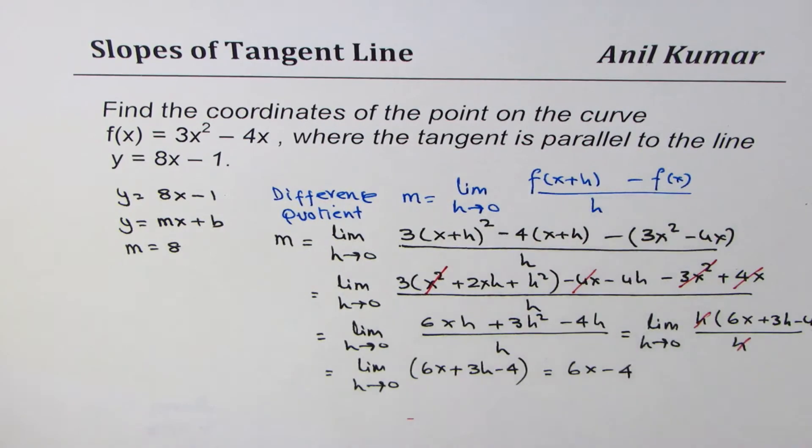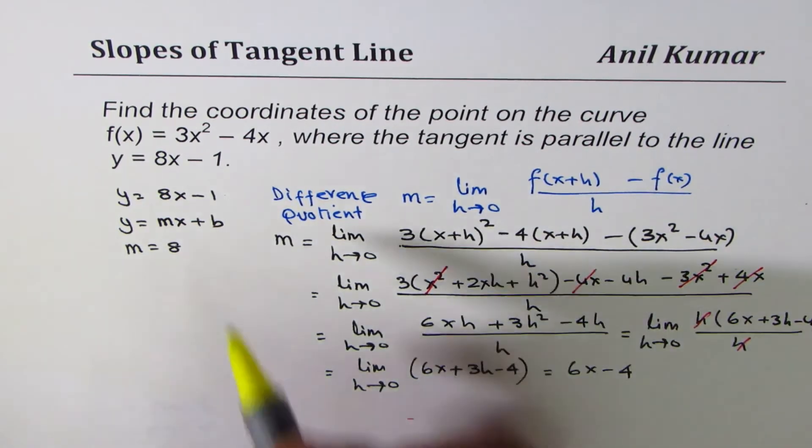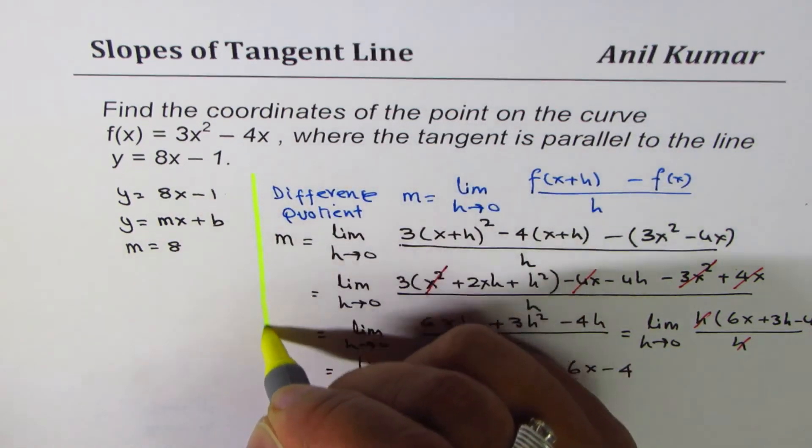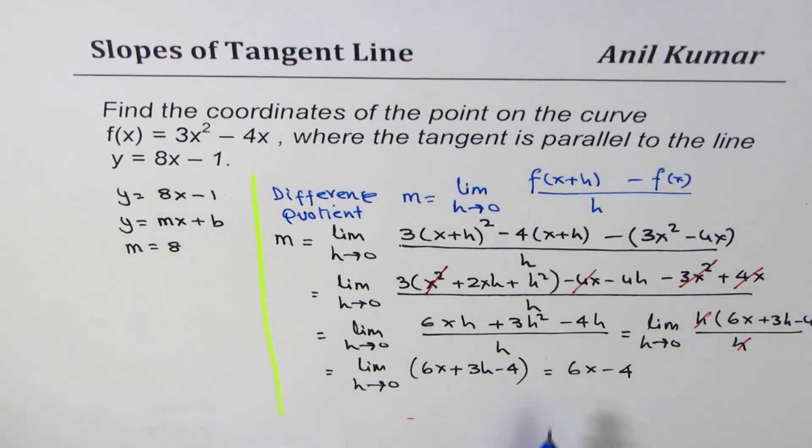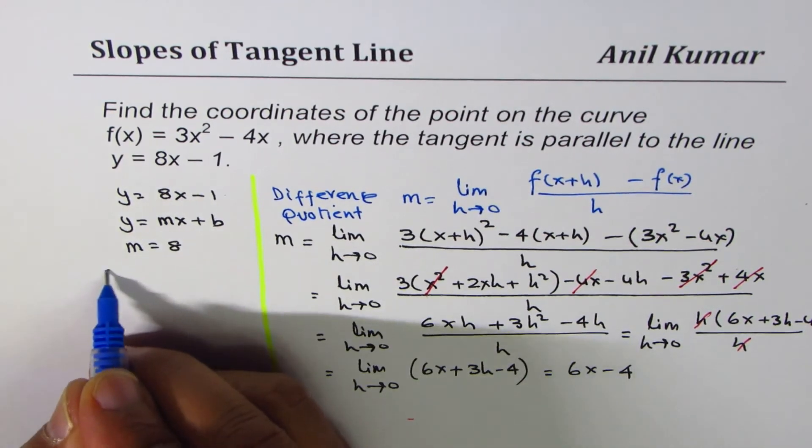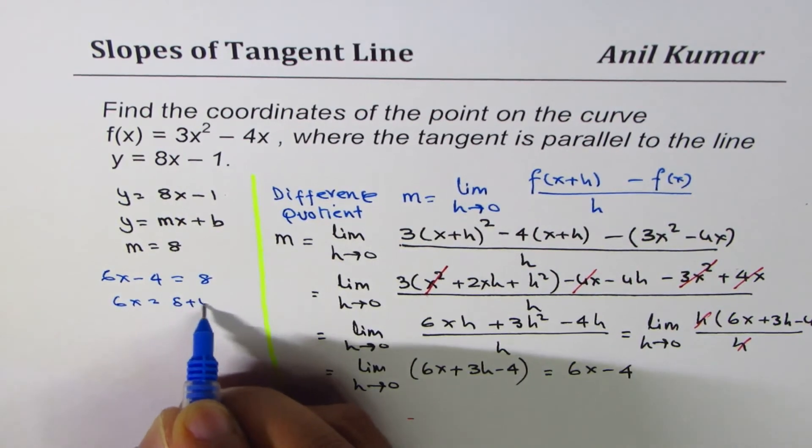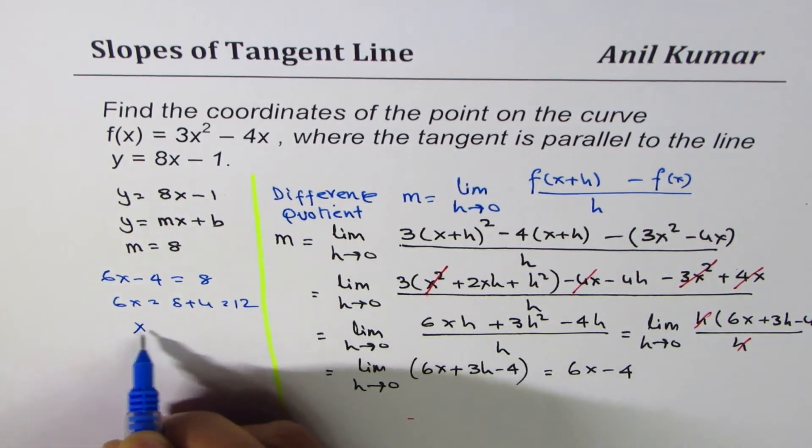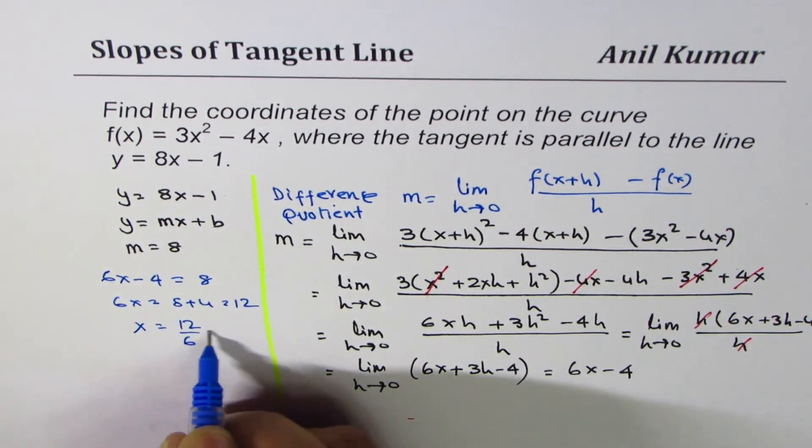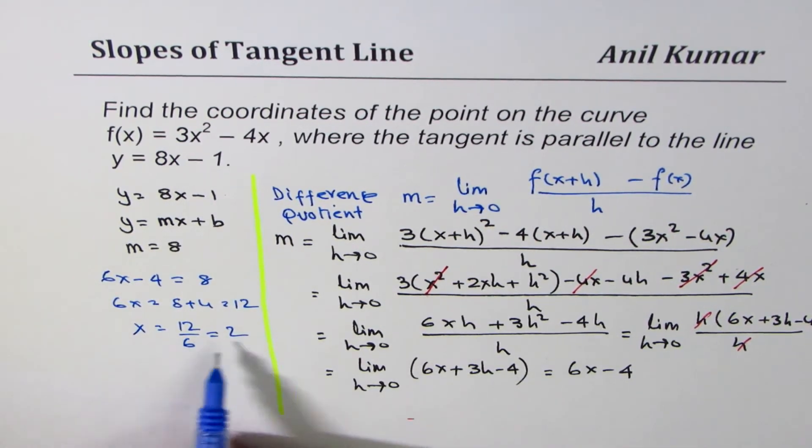Now we know this slope should be equal to 8. So let me equate: 6x - 4 = 8. 6x = 8 + 4 which is 12. x equals 12 divided by 6 which is 2.